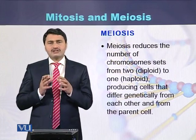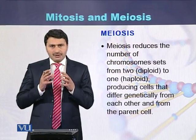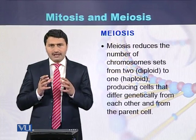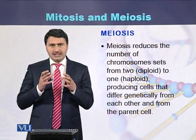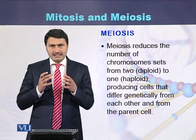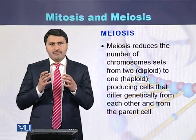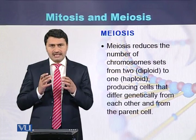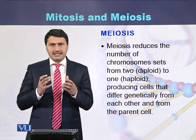In case of meiosis, the diploid number is reduced to haploid number. A single cell which is initially diploid and has two sets of chromosomes produces, as a result of meiosis, four haploid cells. But all these haploid cells are not genetically identical to each other and they are not identical to the parent cell.